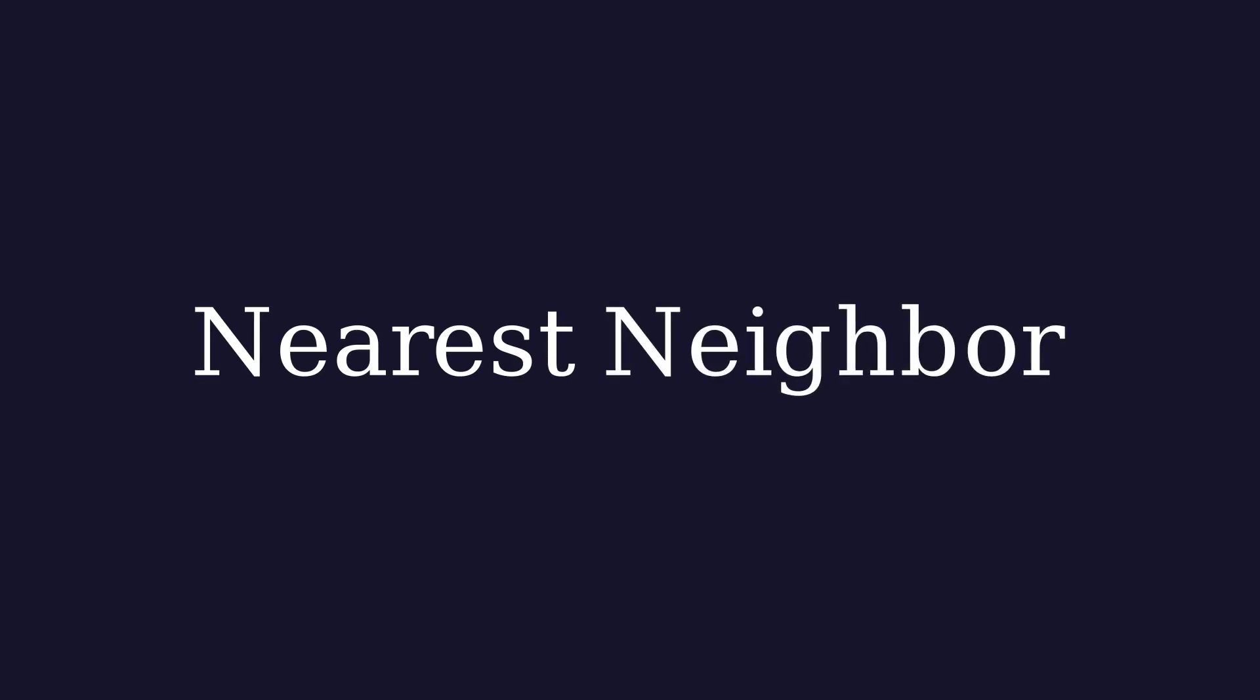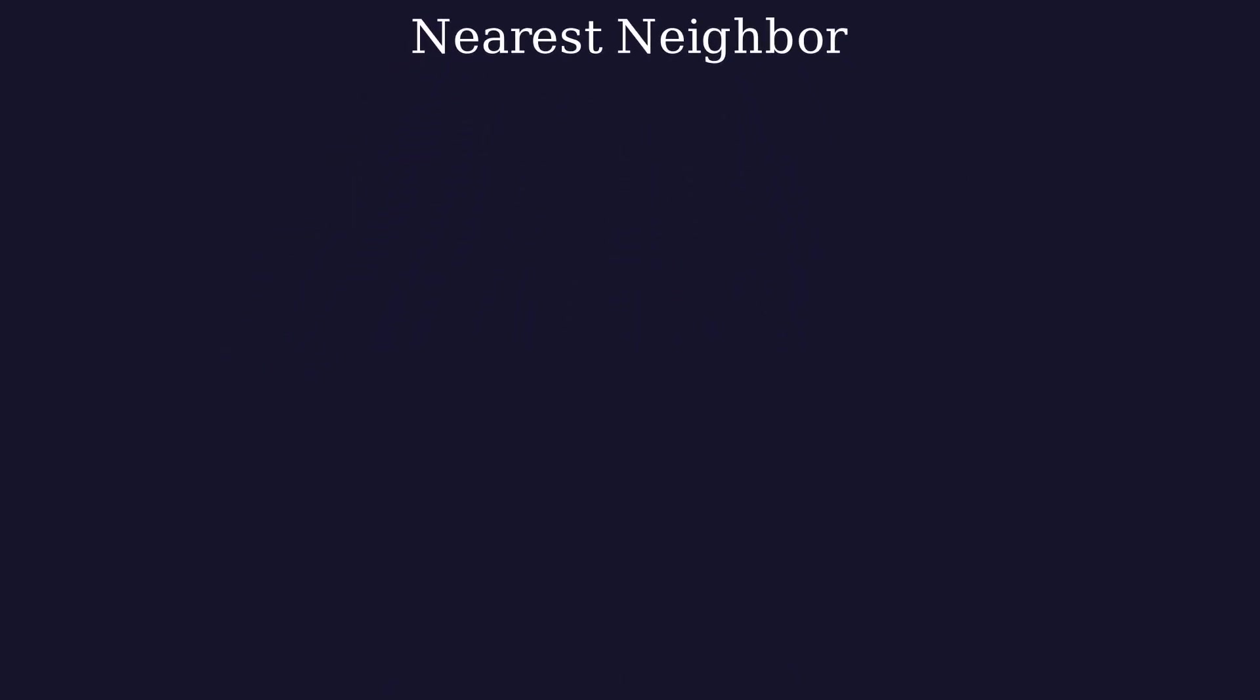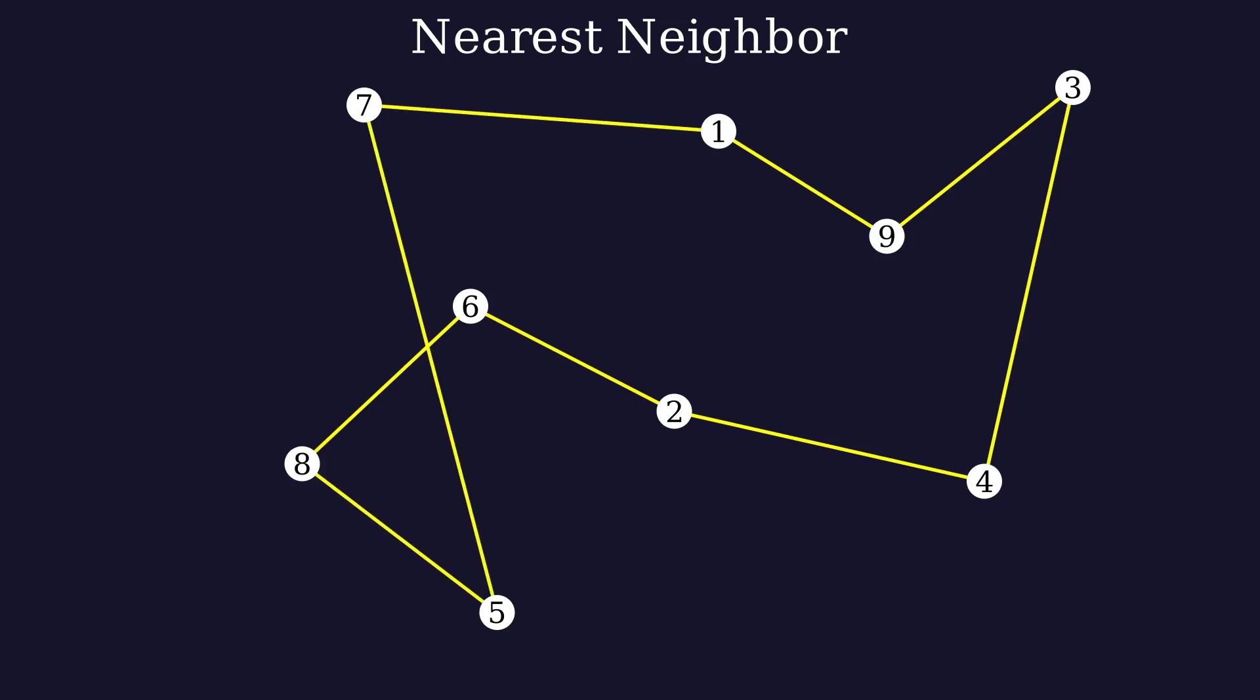One way to solve this problem is by using a method called the nearest neighbor algorithm. In this approach, the salesman always picks the closest city that he hasn't visited yet as his next destination. For example, if he starts here, he goes to the closest city, then the next closest, and so on. This way, we get a path that visits all cities. But how can we know if it's optimal?